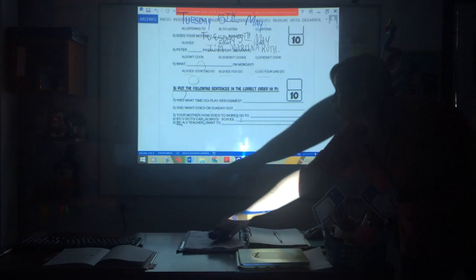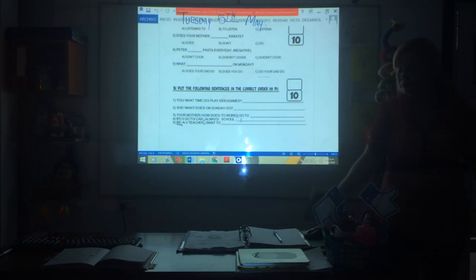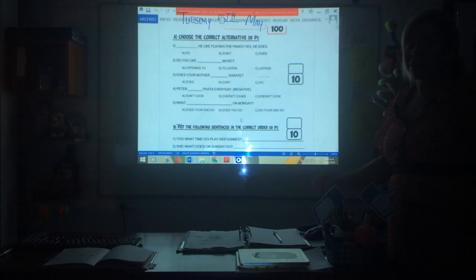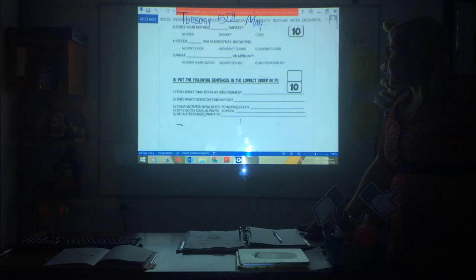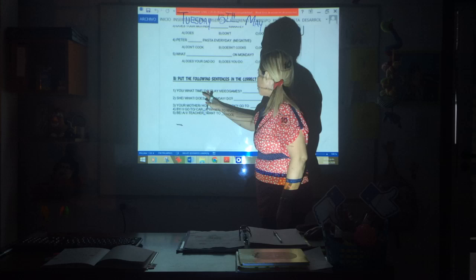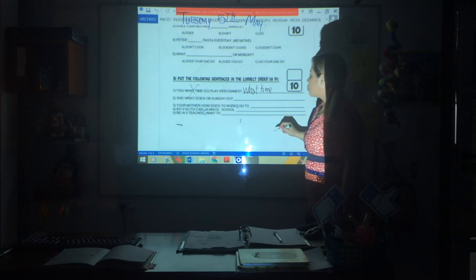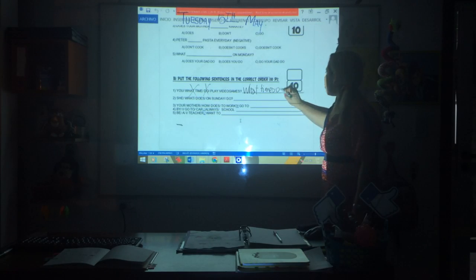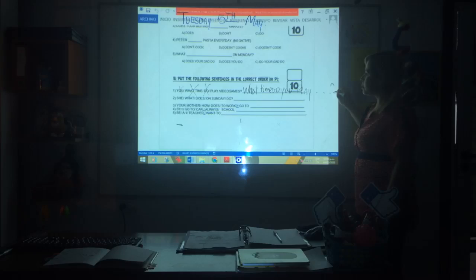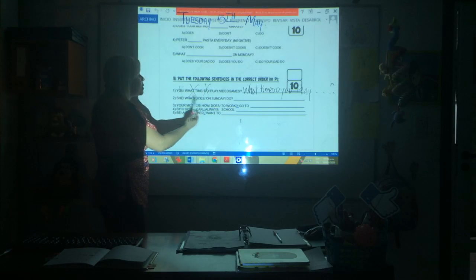Put the following sentences in the correct order. Remember your PDF has to have your name, written here and in the file you're going to send. The sentences are all disordered and you have to do this. First: you, what time do play video games? Read. What time, auxiliary do, subject you, verb play video games. And that's how you're going to read.